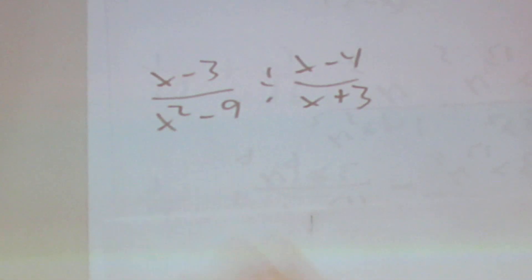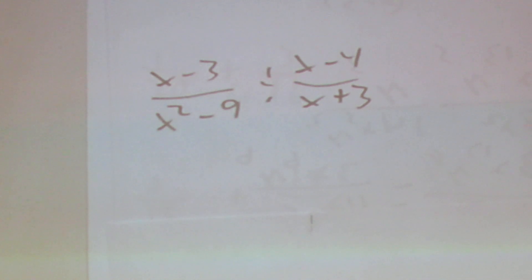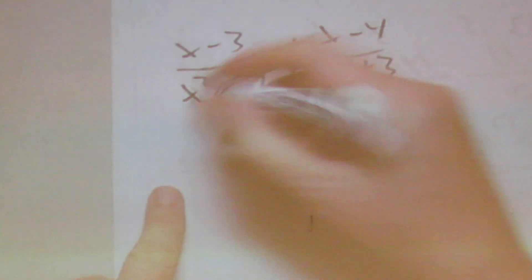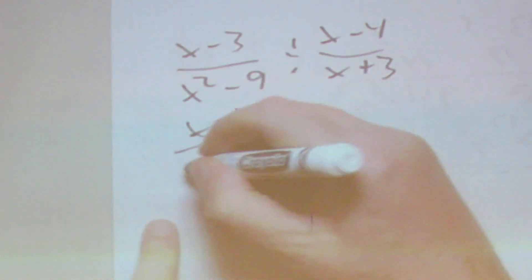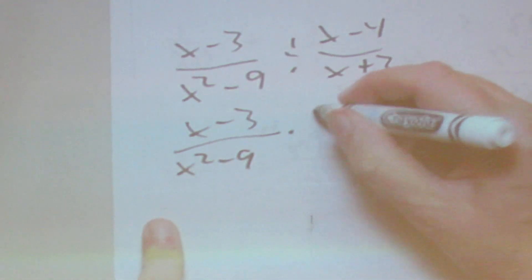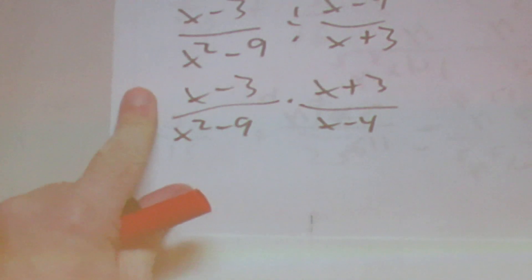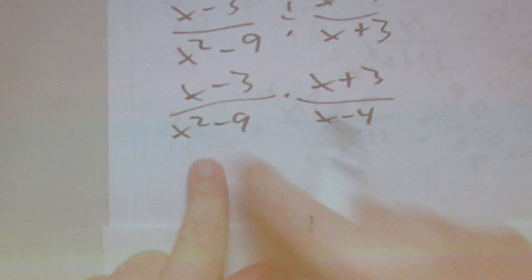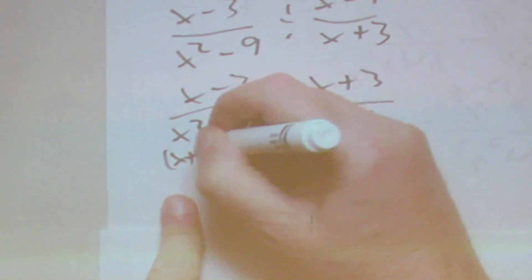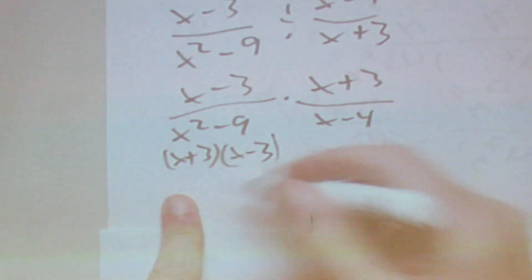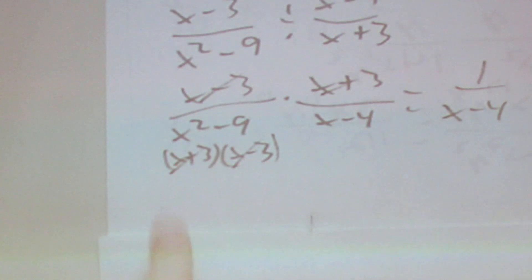The next question is division. We have x minus 3 over x squared minus 9, divided by x minus 4 over x plus 3. When we flip the second fraction, we have x minus 3 over x squared minus 9, times x plus 3 over x minus 4. Then x squared minus 9 factors to x plus 3 times x minus 3. We cancel the x minus 3s and the x plus 3s, leaving 1 over x minus 4.